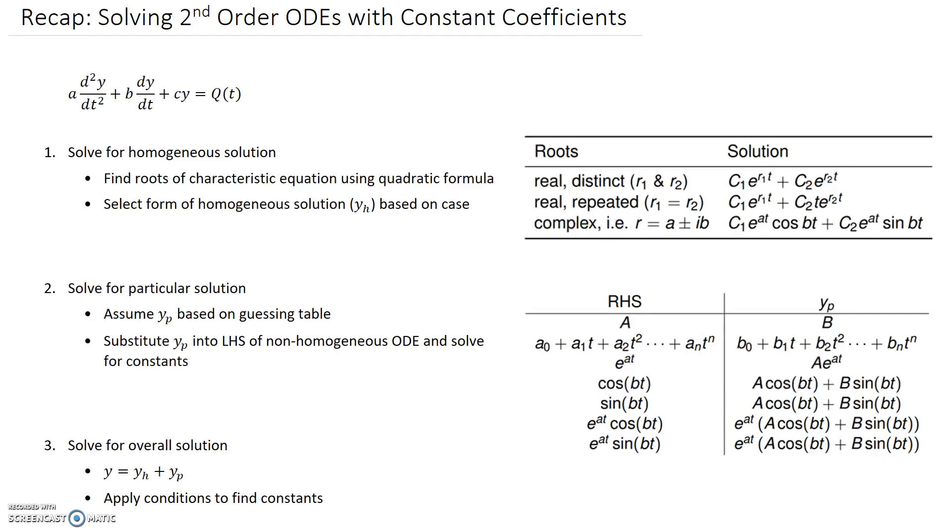The types of equations that we're going to be solving with this method should be able to be written like this. So what we see is that we have an A, a B and a C sitting out the front of each of our terms on the left-hand side. These are the constant coefficients that I'm referring to. We can also see that this is a second-order equation, noting that the highest derivative, so second here, is what defines the order of the equation.